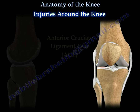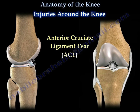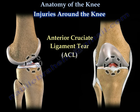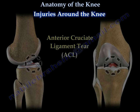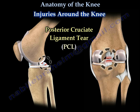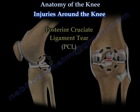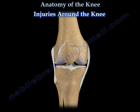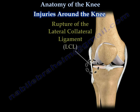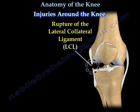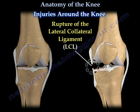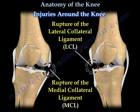In an anterior cruciate ligament injury, the tibia moves forward. In a posterior cruciate ligament injury, the tibia moves backward. Rupture of the collateral ligament of the knee — lateral or medial — will cause abnormal side movement of the leg.